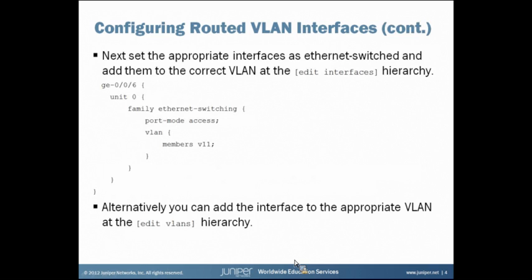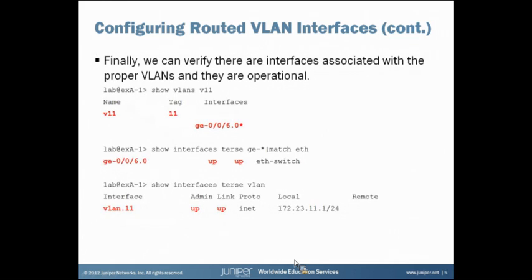Alternatively, you can add the interface to the appropriate VLANs at the Edit VLANs hierarchy. Either way is acceptable. Finally, we can verify there are interfaces associated with the proper VLANs and that they are operational, using the Show commands.